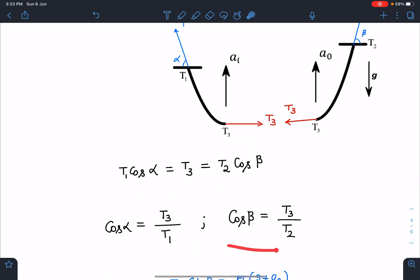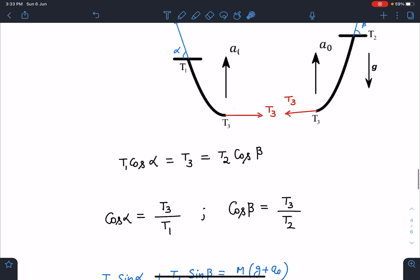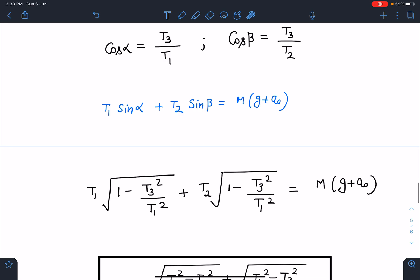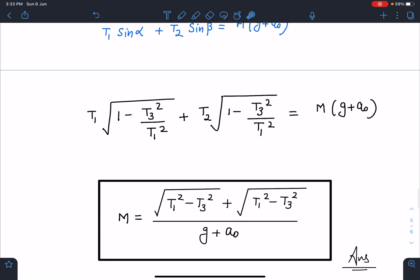So we have this equation, and from here cosα and cosβ values are known to us: T₃/T₁ and T₃/T₂. After this we can easily say that if I substitute the values of sinα and sinβ in this equation, so T₁ times √(1 - cos²α) which is T₃²/T₁², and similarly T₂ times sinβ √(1 - cos²β). If I simplify this, I get mass M = [√(T₁² - T₃²) + √(T₂² - T₃²)]/(g + a₀). This is going to be the final answer.